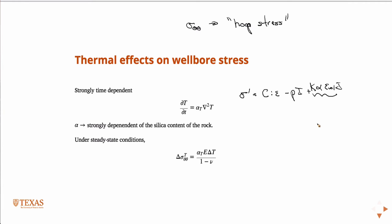We can do a series of approximation of that, and there's a couple of terms. Those equations are in Zoback's book. We're not going to do it here. But in the end, under steady state conditions, you get this delta hoop stress. This is the increment of hoop stress associated with an increment of temperature change.